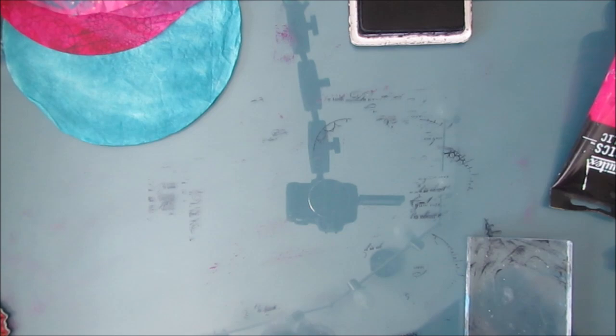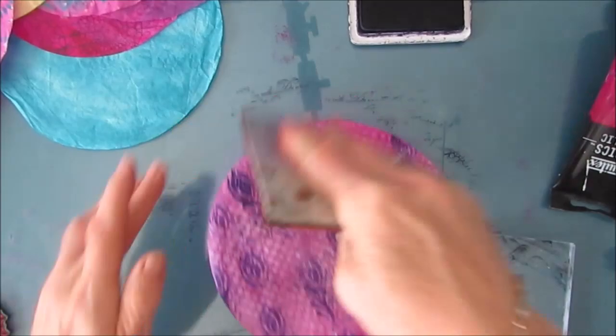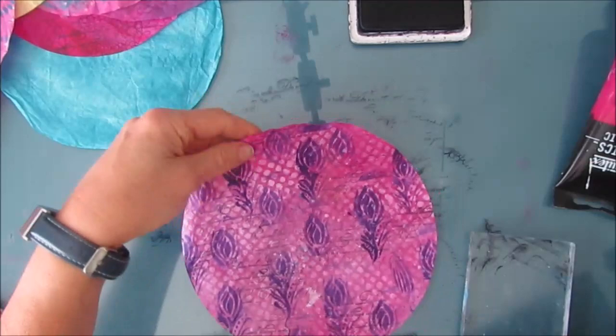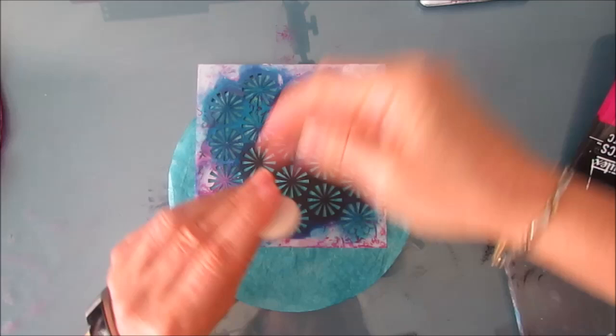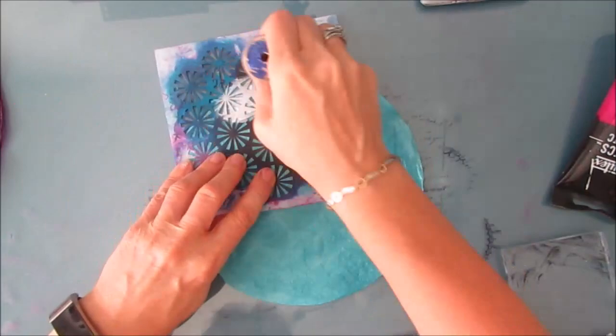So just like when you do a background, we're just adding layers of interest on these collage papers. Now you can also stencil on here once it's dry. And this one was, I think I found it actually in my stash. It wasn't part of the stash builder, but I decided that I wanted to add something to it. So I'm stenciling it on when it's dry.